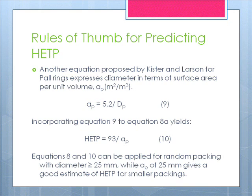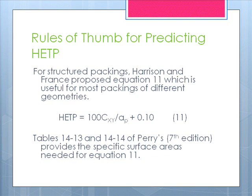Equations 8 and 10 can be applied for random packing with diameter greater than or equal to 25 millimeters, while A_P of 25 millimeters gives a good estimate of HETP for smaller packings. For structured packings, Harrison and Franz proposed Equation 11, which is useful for most packings of different geometries: HETP is equal to 100 C_XY over A_P plus 0.1. Tables 14-13 and 14-14 of Perry's 7th edition provide the specific surface areas required for these equations.